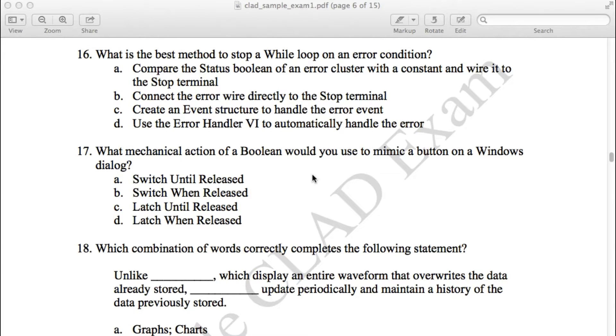Option A says compare the status boolean of an error cluster with a constant and wire it to the stop terminal, but we do not know what the constant is in this particular problem.